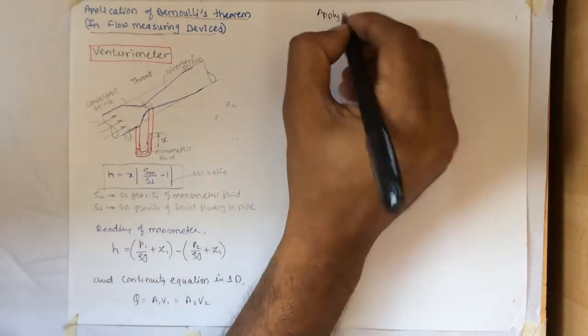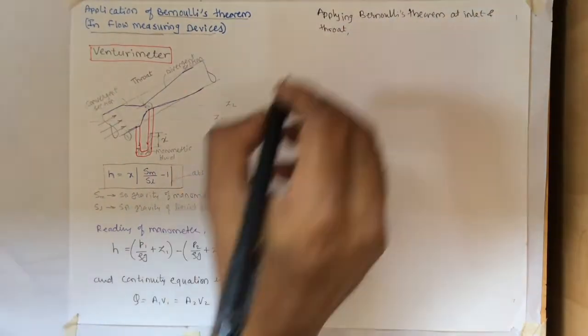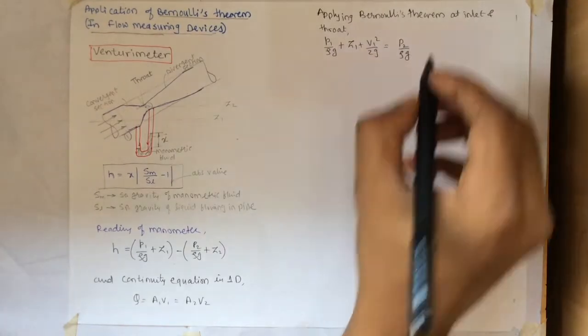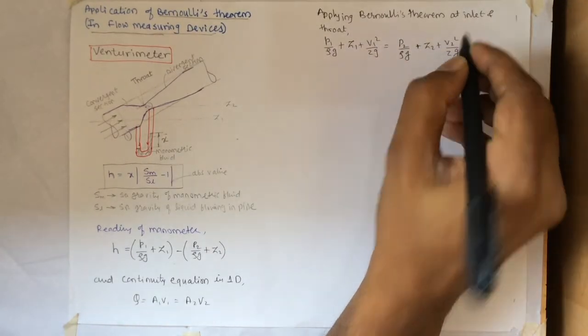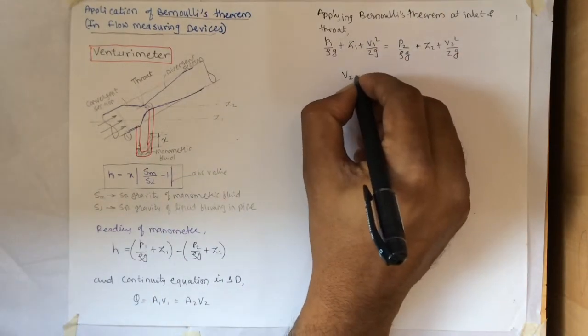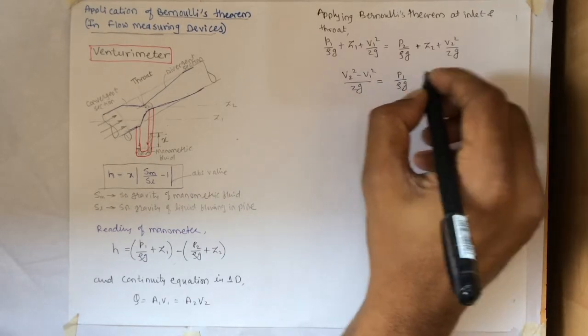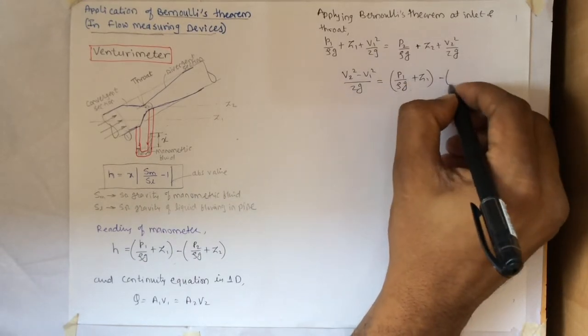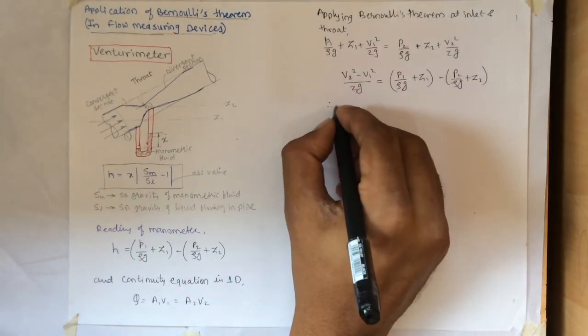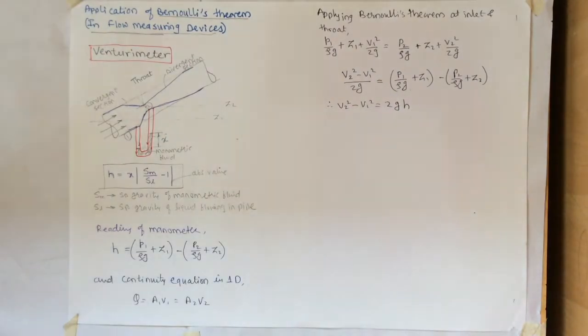Now applying Bernoulli's theorem at inlet and throat. We get P1 by rho g plus Z1 plus V1 square by 2g equals P2 by rho g plus Z2 plus V2 square by 2g. After simplification we get V2 square minus V1 square divided by 2g equals P1 by rho g plus Z1 minus bracket P2 by rho g plus Z2.